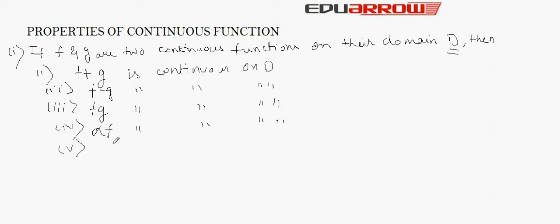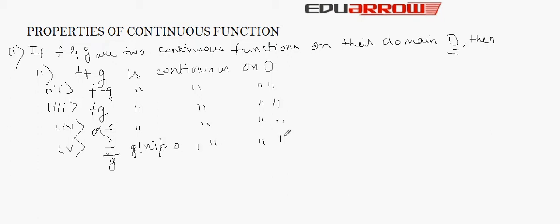Next, if we divide a function f by a function g, provided that g(x) should not be equal to 0, then also the resulting function is continuous on its domain d.